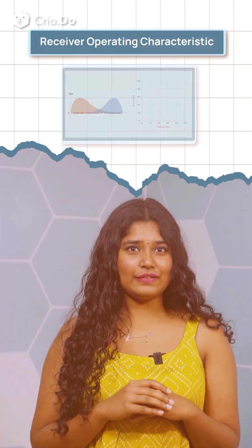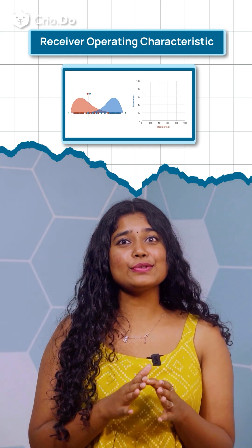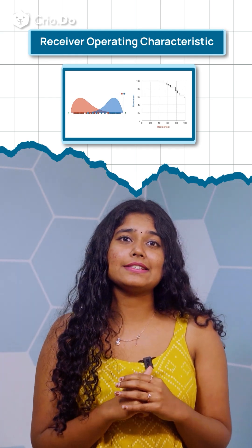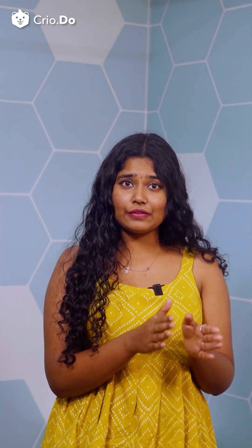The ROC, Receiver Operating Characteristic Curve, is a graphical representation used to evaluate the performance of a binary classification model. It plots the true positive rate sensitivity against the false positive rate, one minus specificity, at various threshold settings, helping to visualize the trade-off between correctly identifying positive cases and incorrectly classifying negative cases as positive.